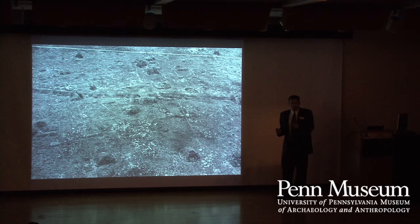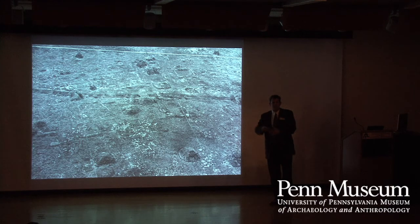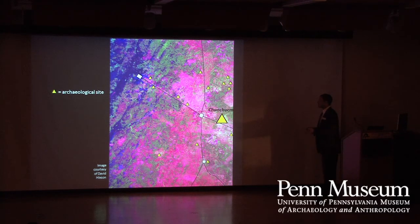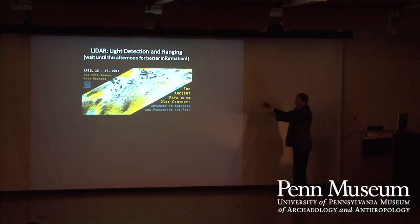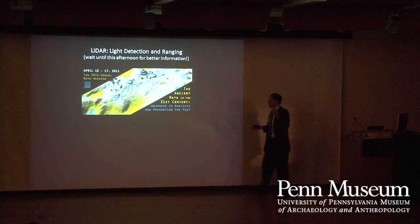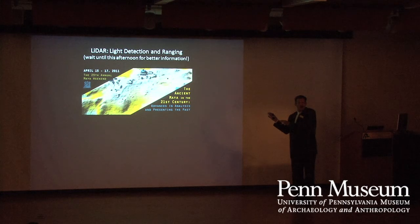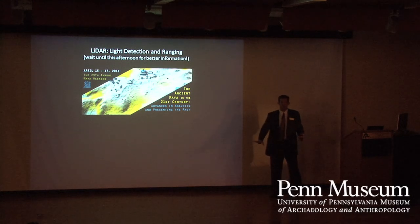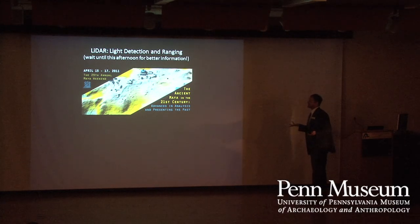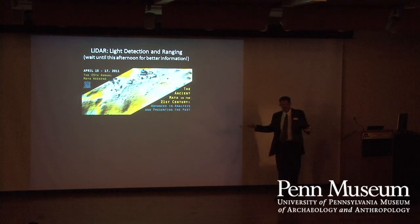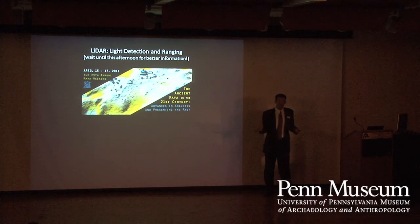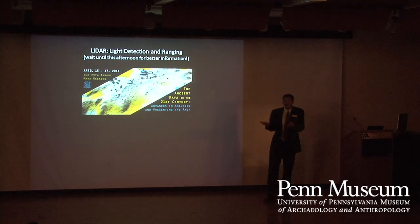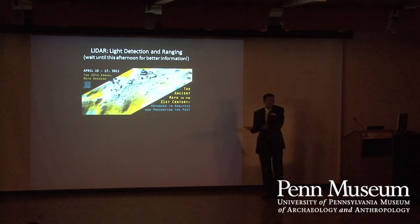This gets into the question of whether a new remote sensing technology could also find the small stuff. The answer is yes — I don't want to steal the thunder of Diane and Arlen, who will speak later today about LiDAR. The advantage of LiDAR is that it sees through the vegetation and can find really small stuff. Basically, it creates a three-dimensional digital elevation model — a relief map — and because Maya houses are often built on top of elevated platforms, you can find those changes in elevation which are the footprints of platforms.